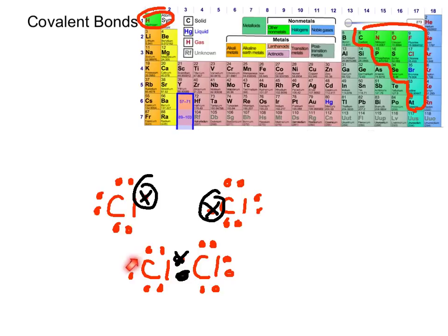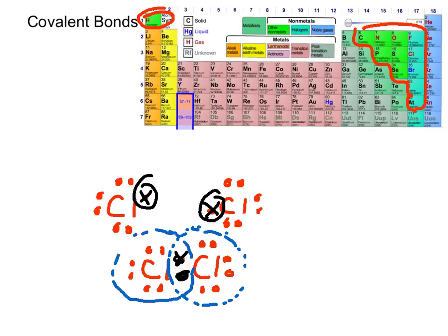If I do the same on the other chlorine — counting the two shared ones — it also has a full outer shell or octet. So both chlorines now basically have octets or full outer shells.